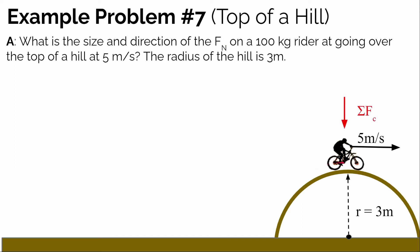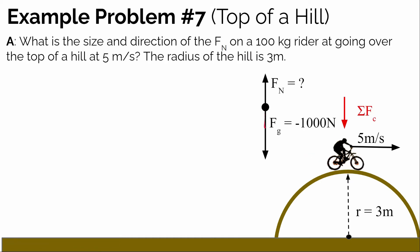Since they're moving in a circular path at that instant, at the very top they're not changing their speed because they're moving to the right, and the sum of the forces has to be pointed straight down towards the center of the circular path. The forces the biker experiences are a gravitational force straight down of about negative 1,000 newtons, since their mass is 100 kilograms, and the hill pushes up with a normal force pointing straight up. The normal force has to be smaller than the force of gravity because for all objects in circular motion, there has to be more force in the inward direction pointing towards the center of the circle.